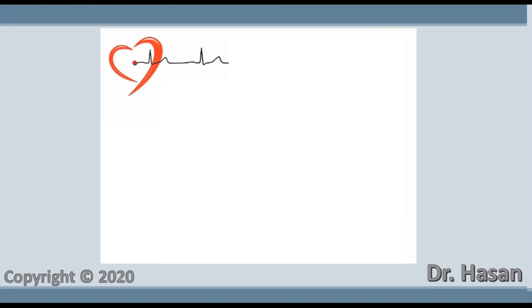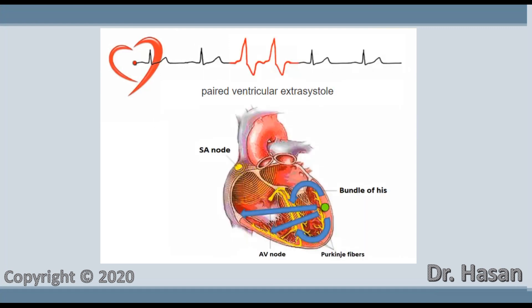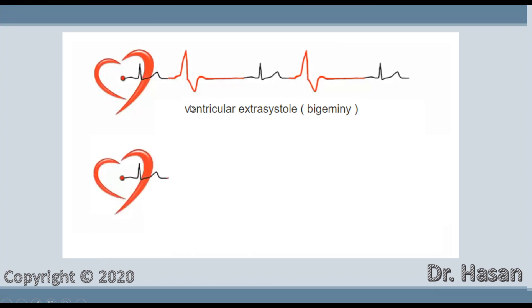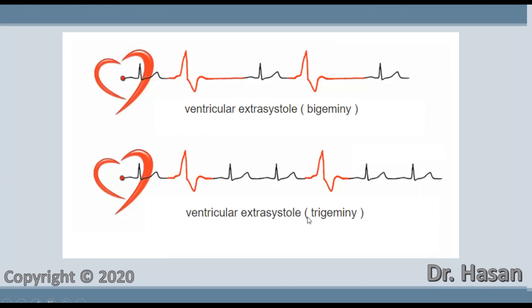Extrasystoles are not always located singly on an ECG; they can be grouped together. When two extrasystoles are paired together, this is called paired ventricular extrasystoles — they follow each other consecutively. Another pattern is called bigeminy, where extrasystoles alternate with normal contractions in a one-to-one ratio.